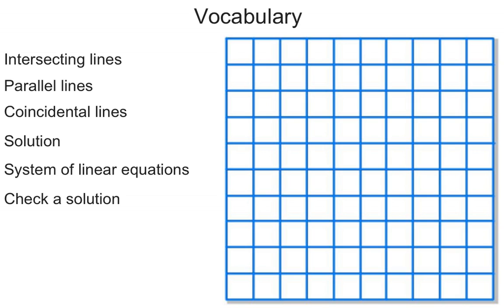First, intersecting lines is just that. Those would be lines that, on a coordinate plane, they cross somewhere.